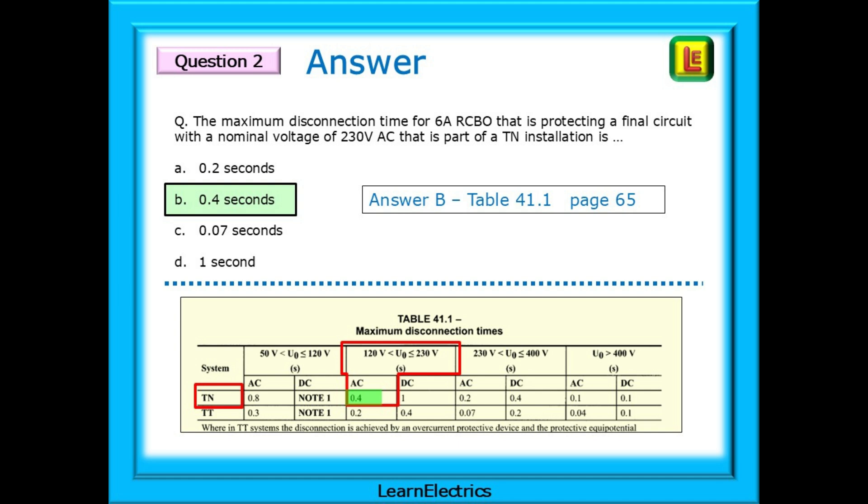The answer choice is B, 0.4 seconds, as found in table 41.1 on page 65. Look in the index at the back of the book, page 583. Find disconnection times, find final circuits and you are directed to table 41.1. The rest is a simple case of cross-referencing the table.